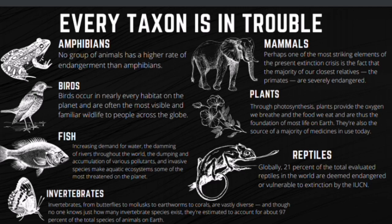Regarding fish, increasing demand for water, overfishing, the damming of rivers, the dumping and accumulation of various pollutants, and invasive species make aquatic ecosystems some of the most threatened on the planet. It is therefore not surprising that many fish species are endangered in cold freshwater and other habitats.